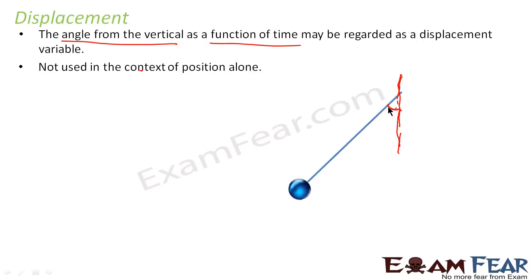Because the object is basically changing its angle with respect to the vertical. So the angle from the vertical as a function of time is what denotes the displacement of an oscillatory motion.